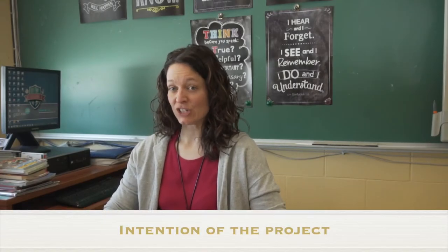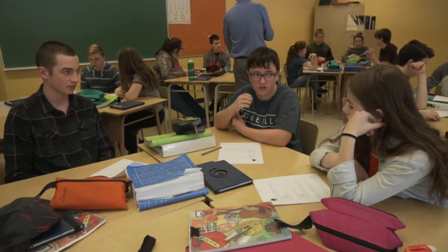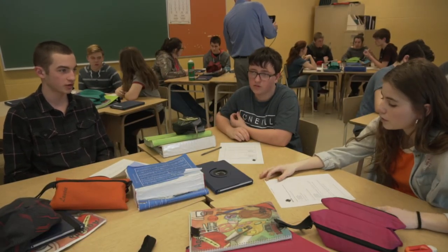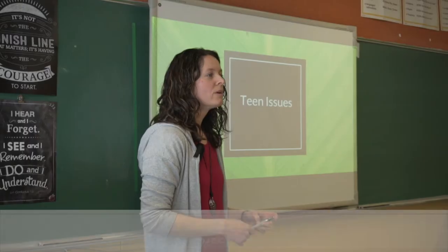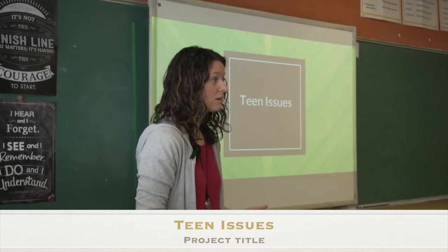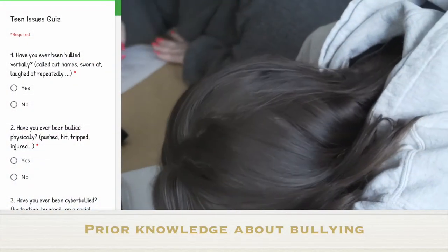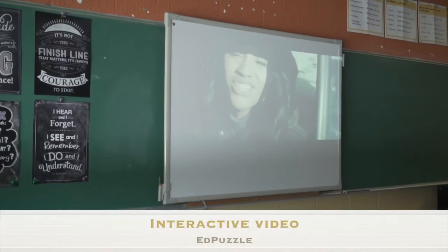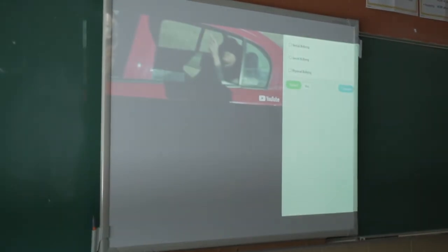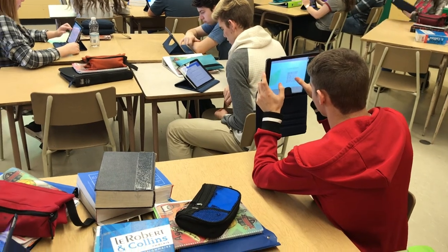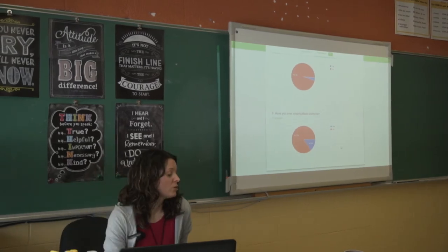I noticed that teenagers had issues and I wanted to improve collaboration and communication between each other. First, they will see the title of the project, Teen Issues, and will try to guess what it's about and if they understand the words. They will take a quiz about bullying to make sure they understand what bullying is and to see their perceptions. They will watch a video about bullying, this time edited with questions, so it will give them time to think and answer before discussing. Their perceptions may change, and after watching, answering, and discussing, they will take the quiz a second time and compare the results.